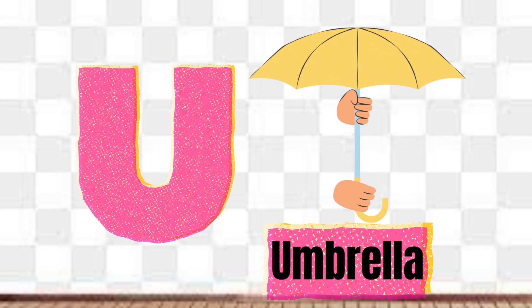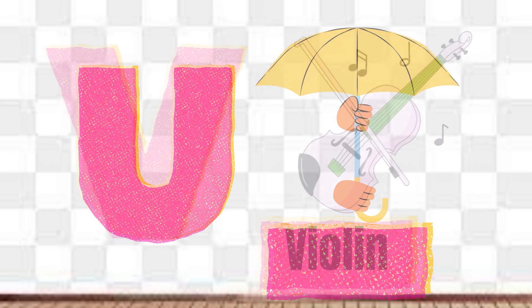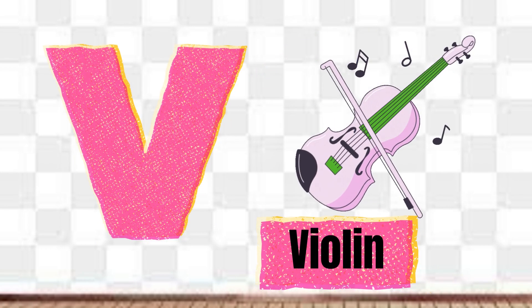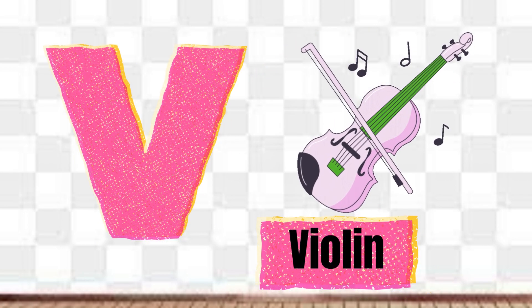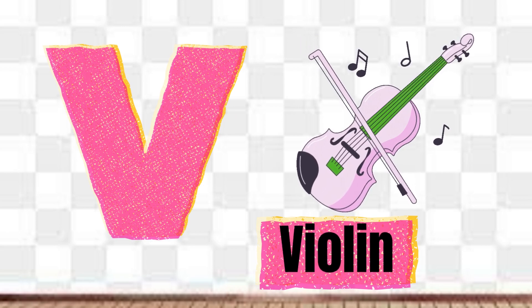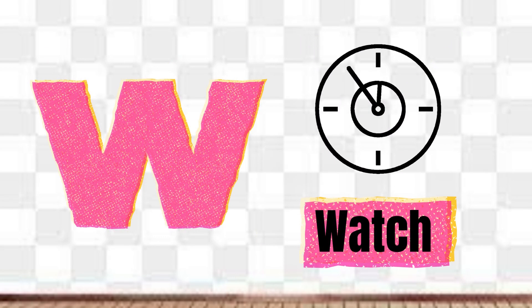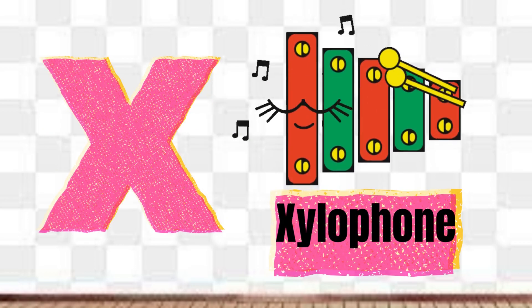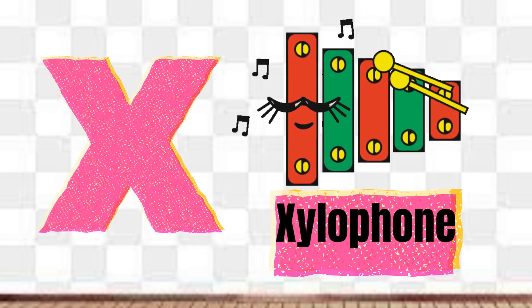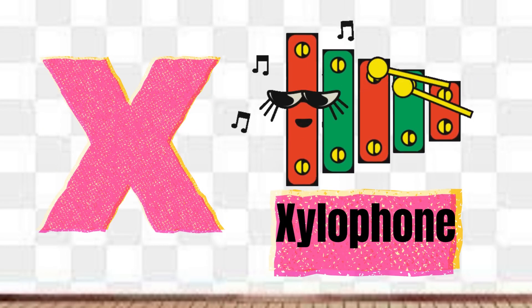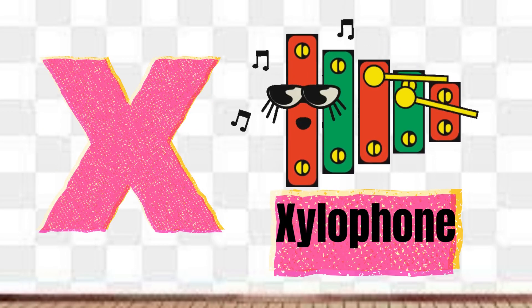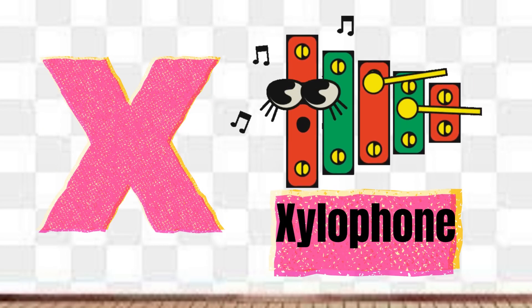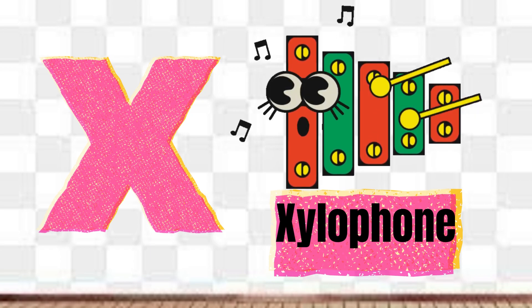U is for Umbrella, U-U-Umbrella. V is for Violin, V-V-Violin. W is for Watch, W-W-Watch. X is for Xylophone, X-X-Xylophone.